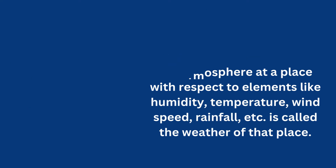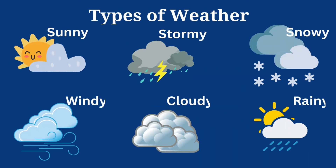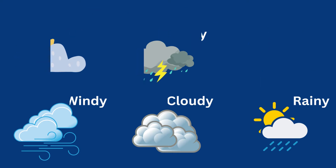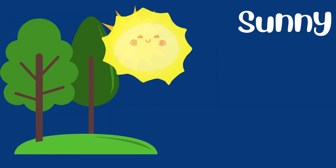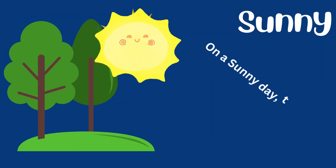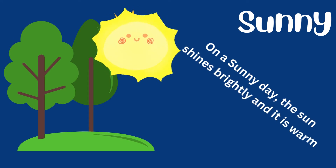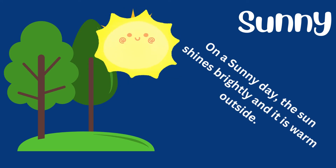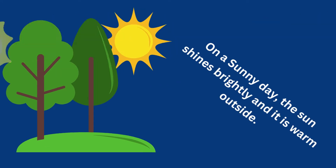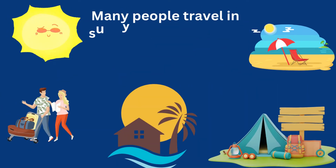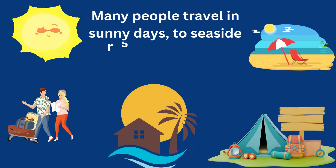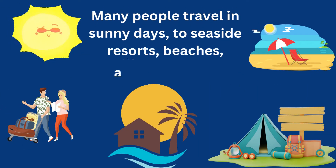There are six types of weather: sunny, windy, rainy, snowy, stormy, etc. What is sunny weather? On a sunny day, the sun shines brightly and it is warm outside. Many people travel on sunny days to seaside resorts.